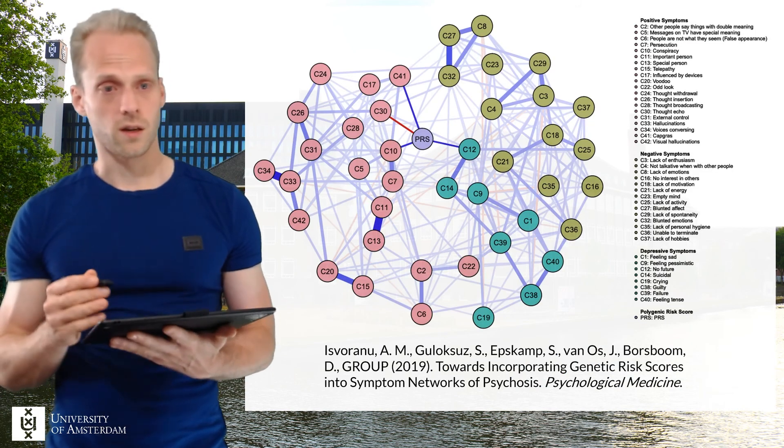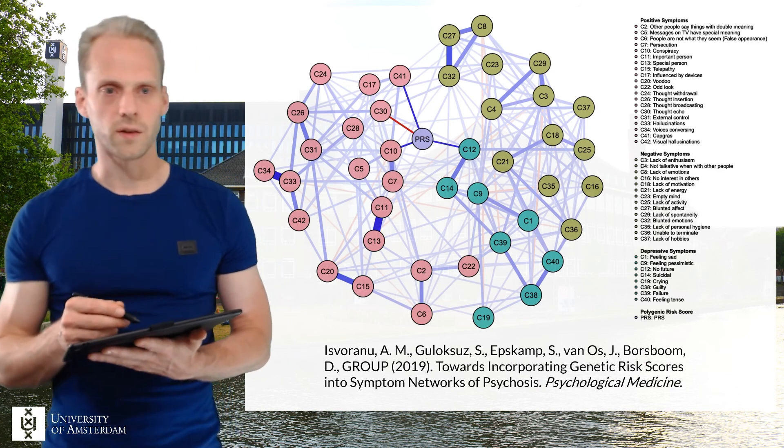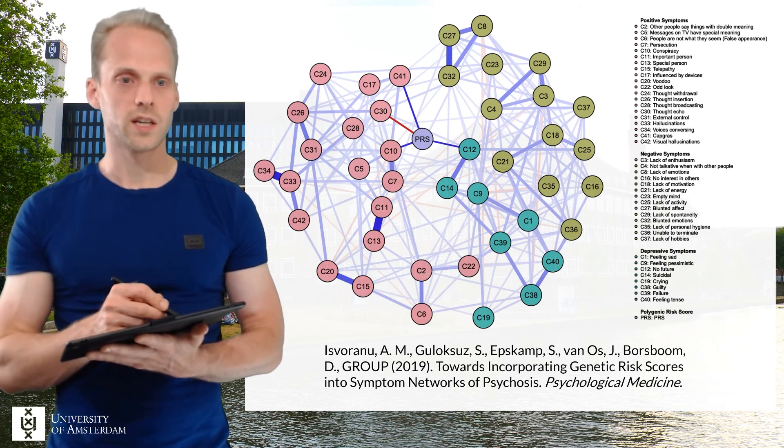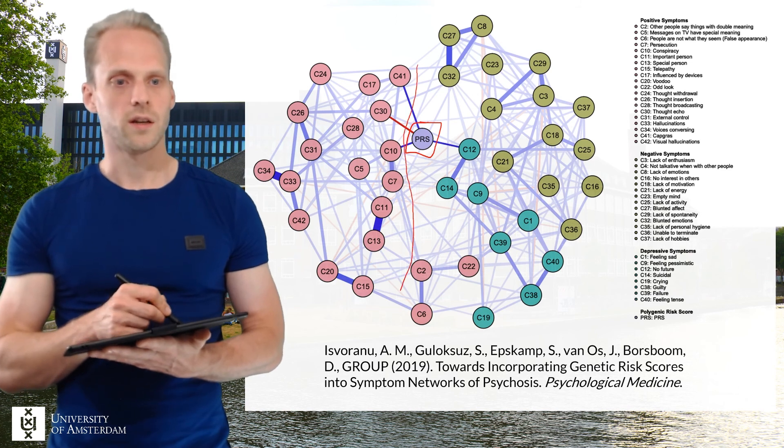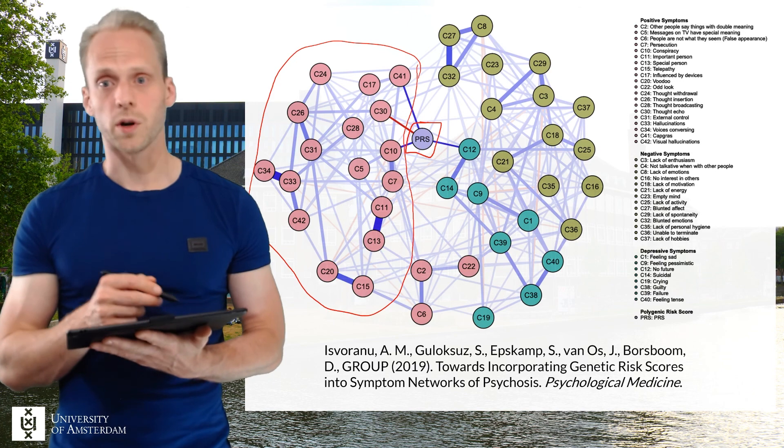Now we can scale this up to many more variables. So this is an example of a particular Gaussian graphical model where we looked at relationships of this PTSD node here to other nodes in the network where all these edges are weighted as partial correlation coefficients.